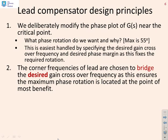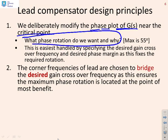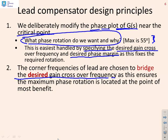Some design principles: what we want to do is modify the phase plot of our system near the critical point. You might ask, what phase rotation do I want and why? The maximum phase rotation you can get is about 55 degrees, which corresponds to β equals 10. What people typically do is specify the desired gain crossover frequency and the desired phase margin — once you've done those two, that will fix everything else. The corner frequencies of the lead are chosen to bridge the desired gain crossover frequency, ensuring maximum phase rotation at the point where you need it most.